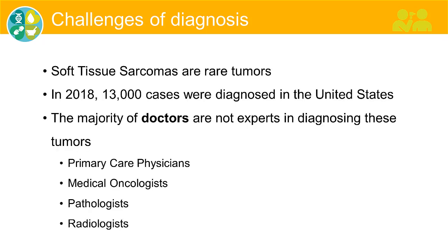Soft-tissue sarcomas are rare tumors, and many medical oncologists you see may have seen only one or two cases in their lifetime. Last year, there were about 13,000 cases diagnosed in the United States. If you contrast that to lung cancer or breast cancer, where the numbers run into the hundreds of thousands, you can see what a distinct group of patients you or your loved ones are who have this disease.